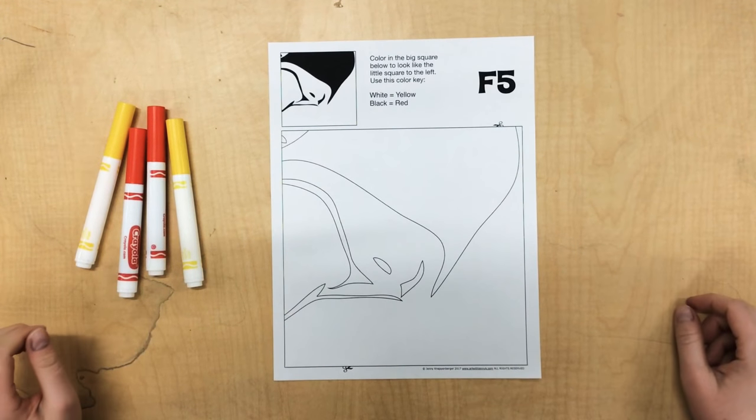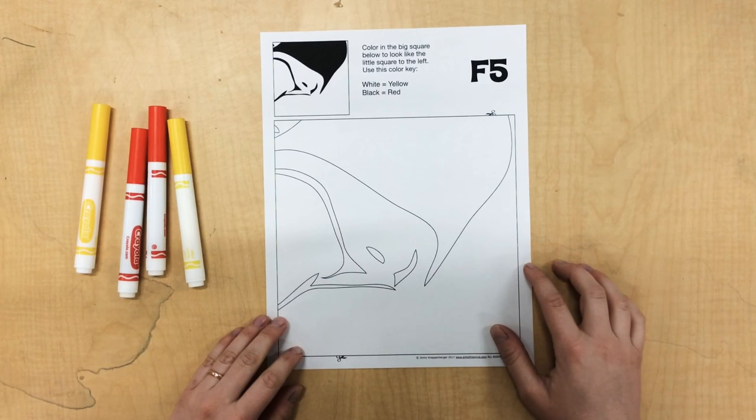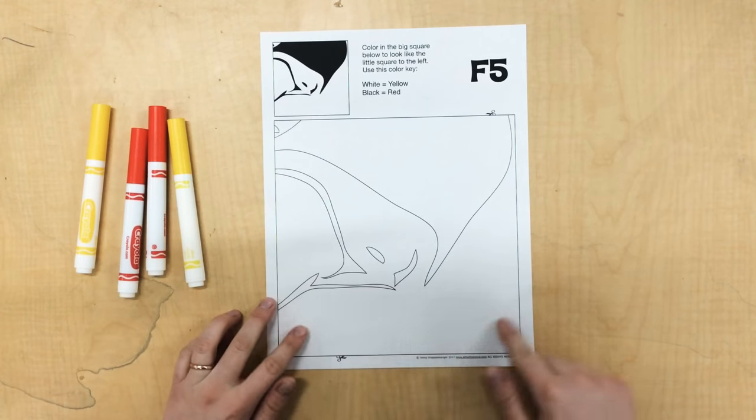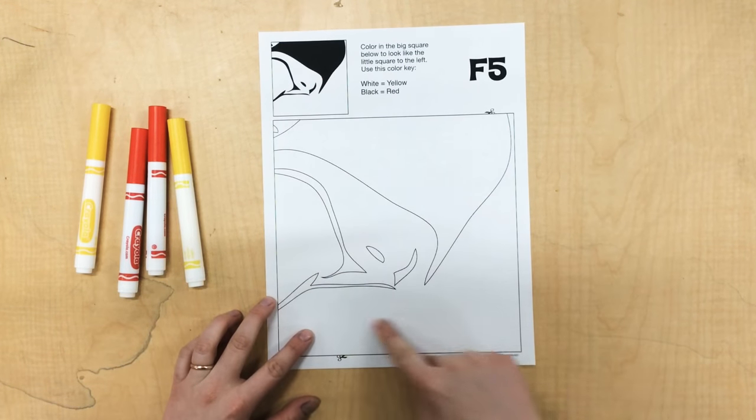Okay friends, today we're going to be making a collaborative mural in honor of Read Across America Week. Everyone's going to get a little piece of paper that looks like this. You're going to use this key to help you color this in.